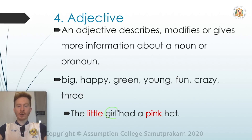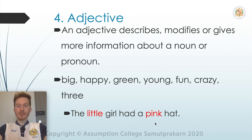What does the girl look like? She is little. What does the hat look like? It's a pink hat. So girl and hat are the nouns, and little and pink are the adjectives that describe the nouns.